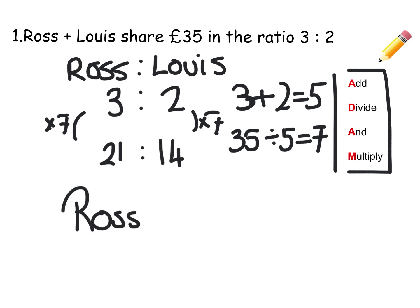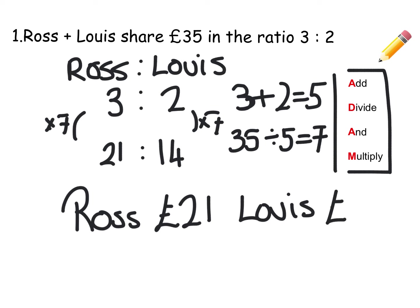Ross gets £21 and Louie gets £14. And a quick check: 21 and 14 adds to 35. And if you were to simplify that ratio 21 to 14 right down, you'd get 3 to 2.